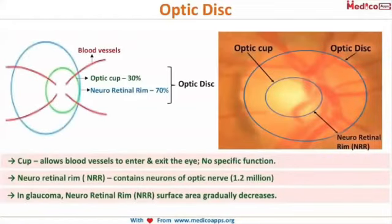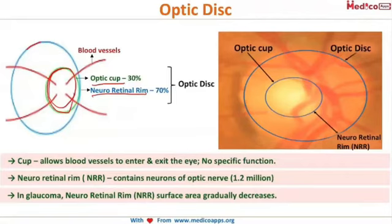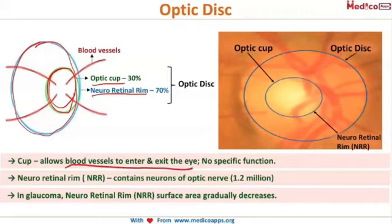The optic disc is the starting point of the optic nerve and it is divided into two parts: the optic cup and the neuro-retinal rim. The optic cup doesn't have any specific function other than allowing blood vessels to enter and exit through it, as you can see here the vessels are entering and exiting through the optic cup.